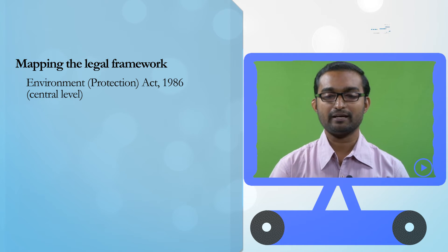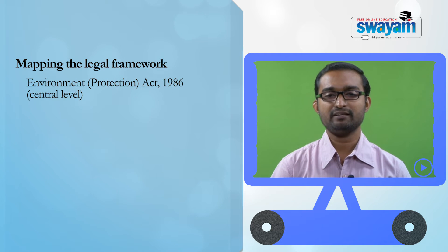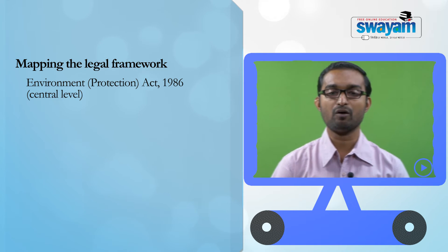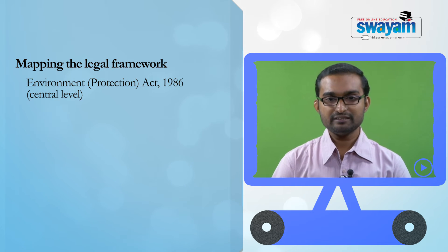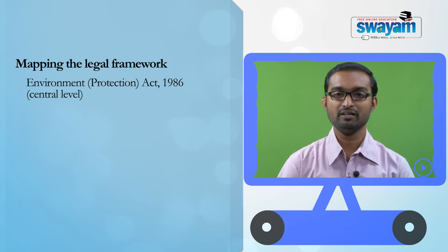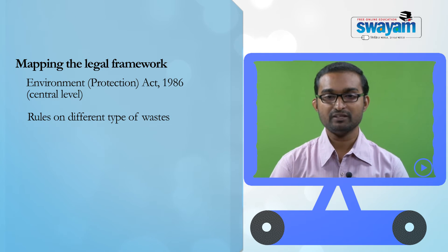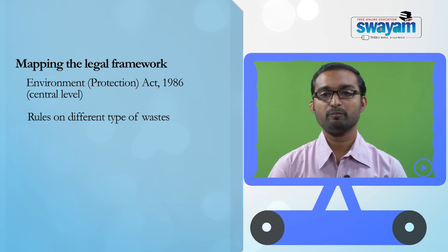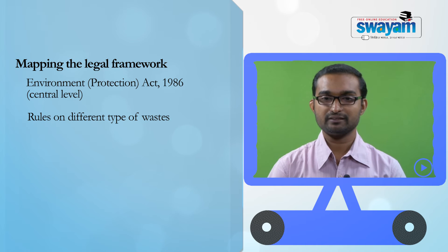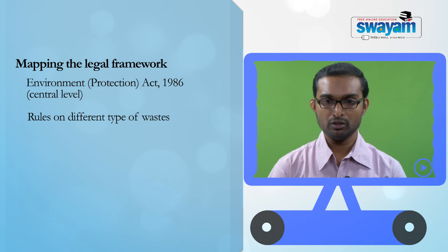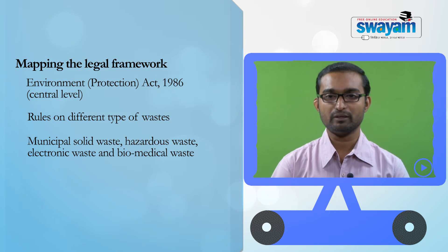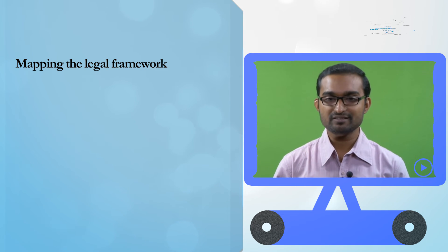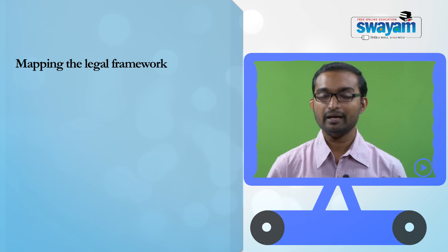The Environment Protection Act 1986 is probably the most important legal instrument in the context of waste management in India. It is an umbrella legislation adopted at the central level that focuses broadly on environment protection measures in India. We will not find a provision on waste management per se in this Act. However, it is extremely important because a number of rules have been adopted under it that focus on different kinds of waste — for example, separate rules on municipal solid waste, hazardous waste, and electronic waste. In this module we will briefly discuss municipal solid waste rules, rules on hazardous waste, and rules on electronic waste.